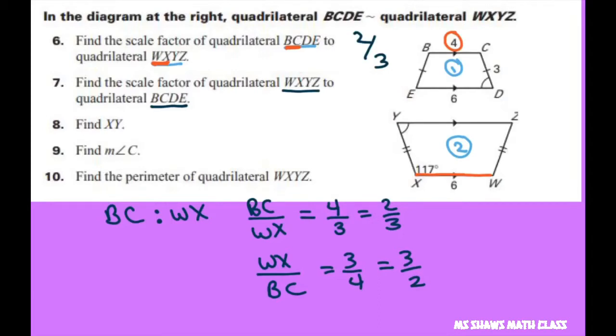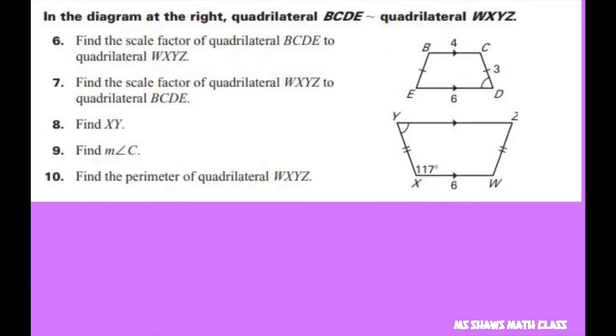XY goes with CD, so I can say BC is to WX as CD is to XY. BC is 4, WX is 6, CD is 3, and we don't know XY, so XY is our X.